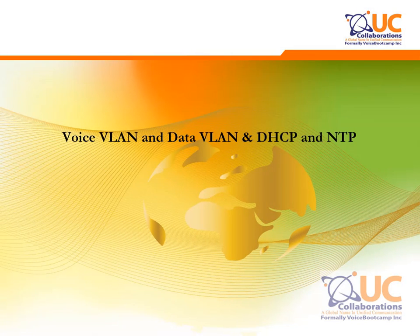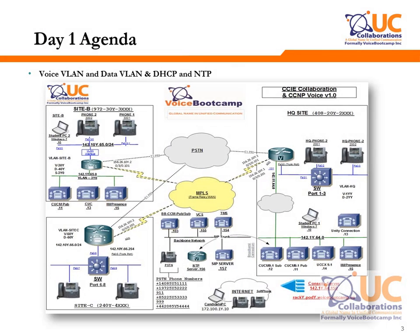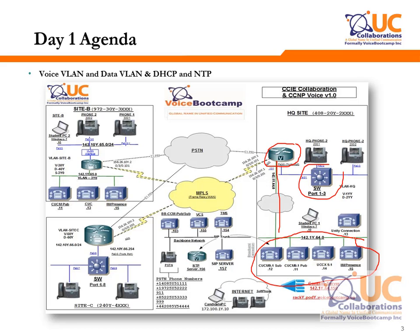The first section we're going to focus on is voice VLAN, data VLAN, DHCP, and NTP. You're given a topology with three sites: head office, Site B, and Site C. In the head office you have HQ Phone 1 and HQ Phone 2 connected to a switch. You have an HQ router with an interface going to your server VLAN, where your Call Manager servers, CUPS, Unity, Presence, and UCCX servers reside. The router and IP phones are connected to Switch 1.